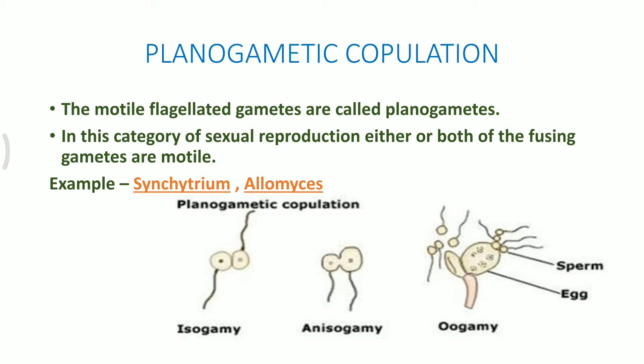Oogamy is the third category, which is quite similar to higher organisms like human beings, where the male gamete is motile and smaller in size whereas the female gamete is non-motile and larger in size. When fusion occurs, it results in the formation of a zygote. The examples are Allomyces or Syncytrium.